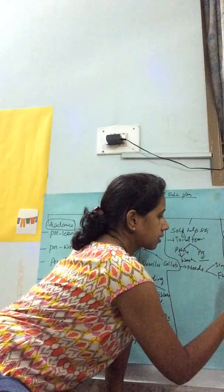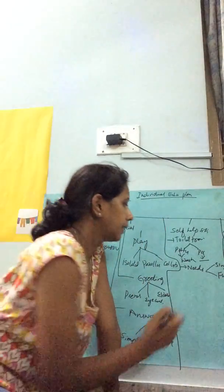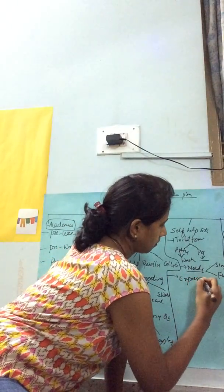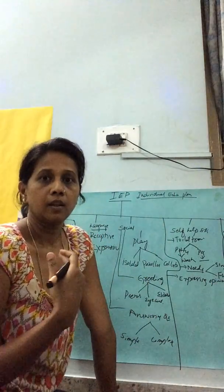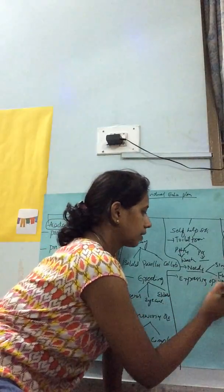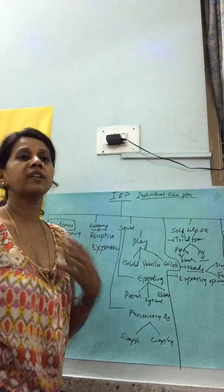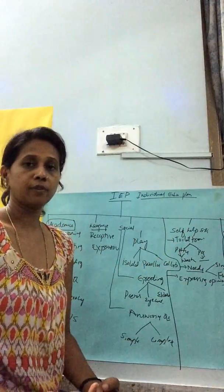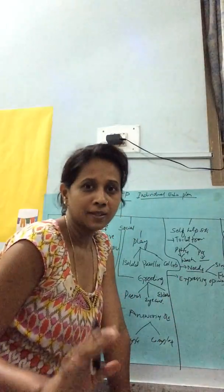Under needs, we start with single words — water, food, sleep — and then move to full sentences: 'I want water,' 'I am hungry.' After that comes expressing opinions: 'I'm thirsty,' 'It's too cold,' 'It's hard' — expressing how he's feeling or his opinion about something.